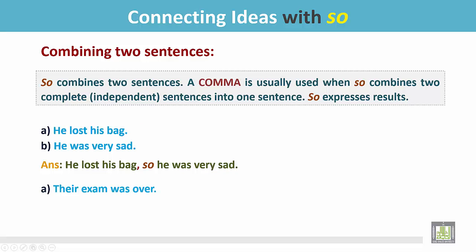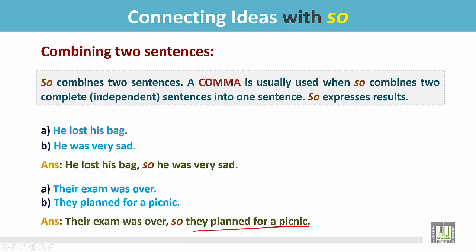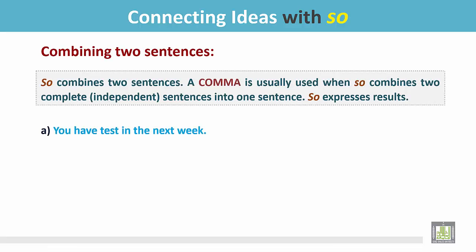Let's see another example: 'Their exam was over. They planned for a picnic.' The first sentence is the cause and the second is the result. The answer: 'Their exam was over, so they planned for a picnic.' The two sentences are joined by 'so' and there is a comma before 'so'.